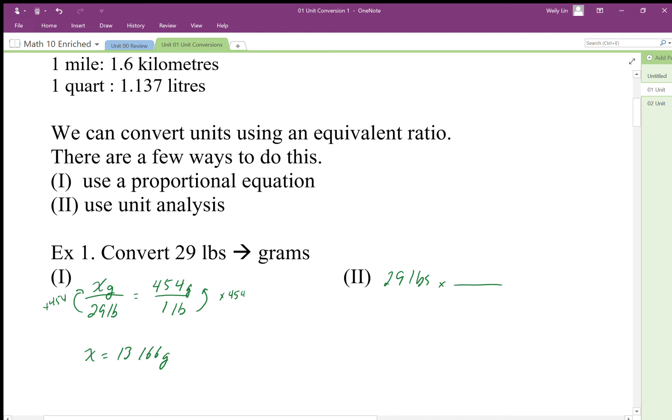With that rate, we just need to make sure that we want to cancel the pounds out, so we need to have this times pounds here, divide by pounds here. Those cancel out.